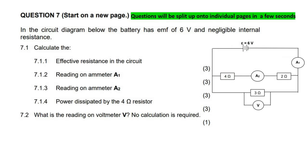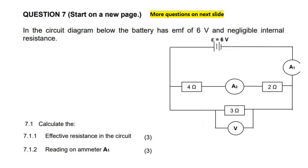All right, so these questions will be split up onto individual pages, but let's just have a look here. In the circuit diagram below, the battery has an EMF of 6V and a negligible internal resistance. The first question says, calculate the effective resistance in the circuit.